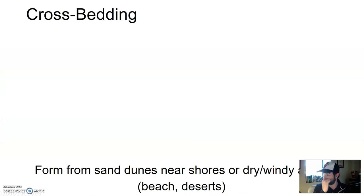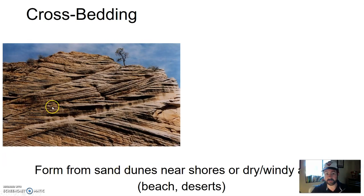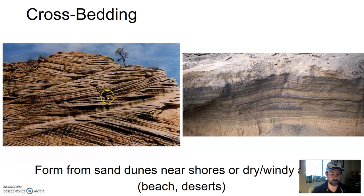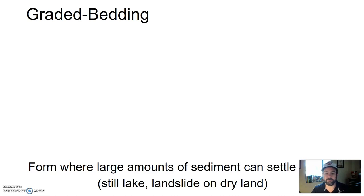Cross bedding is an interesting one. Cross bedding forms from sand dunes near shores or dry, windy areas — beaches, but oftentimes deserts, eolian environments. What I see now is sandstone with all these swooping lines and swooping structures within the sandstone itself — that indicates cross bedding. In the past this must have been sand dunes, because if you cut a sand dune in half you see those same structures. The direction of these little wisps can even indicate the direction the wind was blowing, so you can infer a lot from cross bedding.